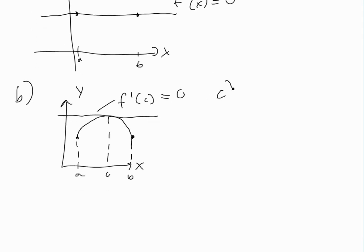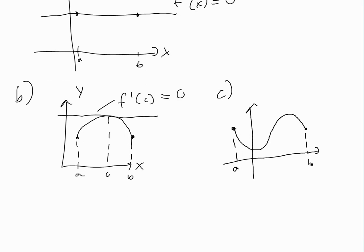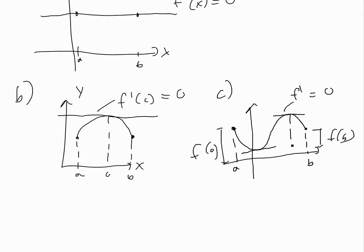Another case could be something like a wavy curve where f of a and f of b are equal. There are actually two areas where the derivative is zero. We can call these c1 and c2, and f prime of c1 equals zero.